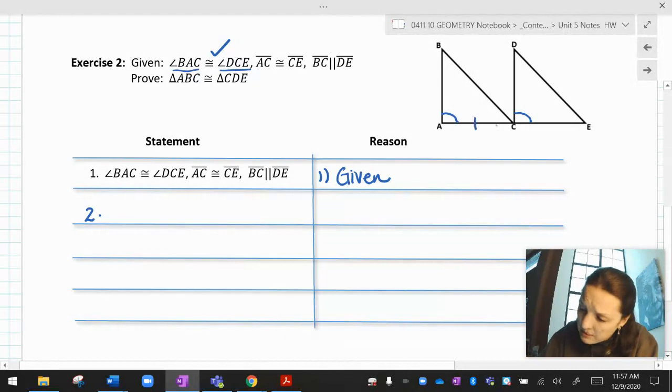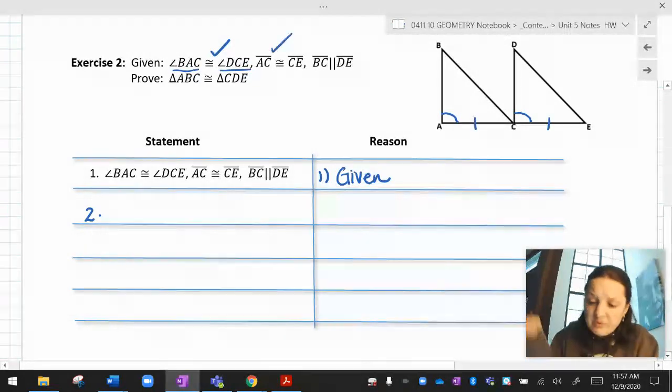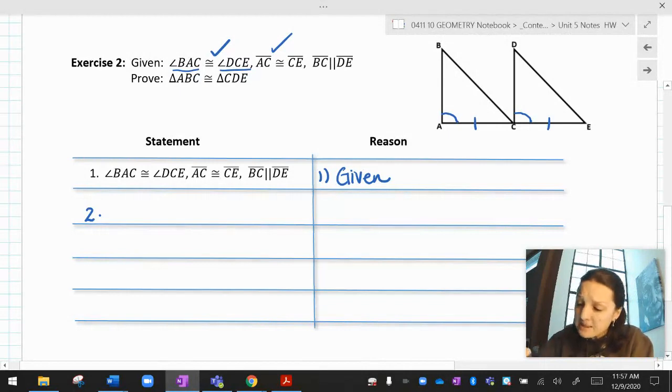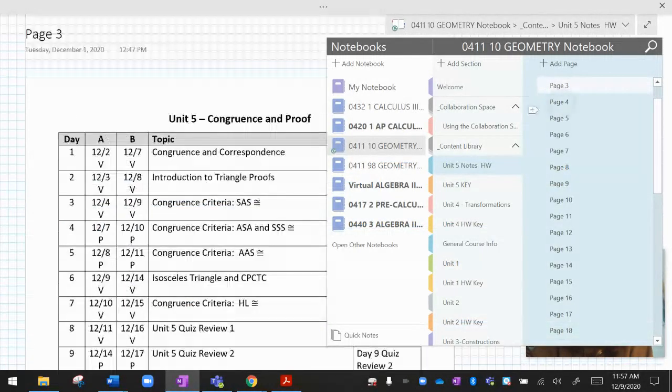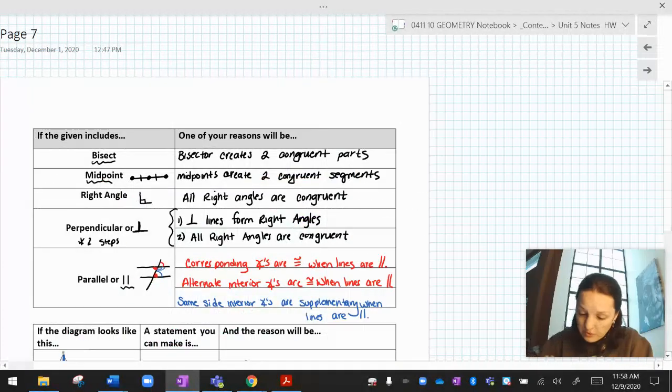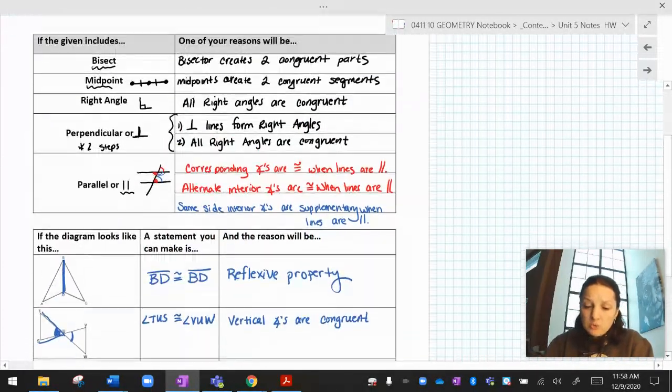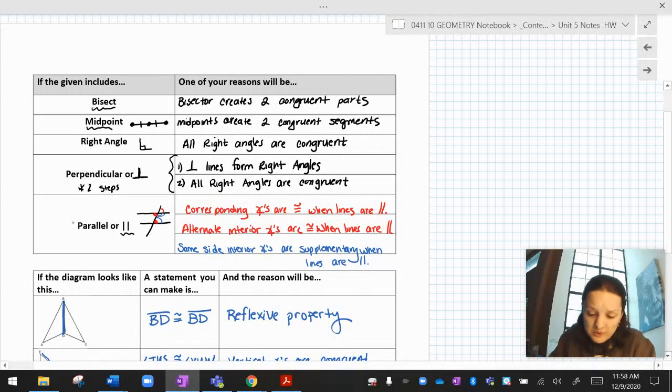BC is parallel to DE. Okay. Parallelism isn't congruency, but it leads to congruency. And if you skip back a couple pages, let me find it. It's page, no, this one, page seven. You will see that on page seven, I said, when you see parallel, you want to look for corresponding angles, alternate interiors, or same side interiors. And I got to tell you, it's usually alternate interiors. And then after that, maybe some correspondings that you're going to see.